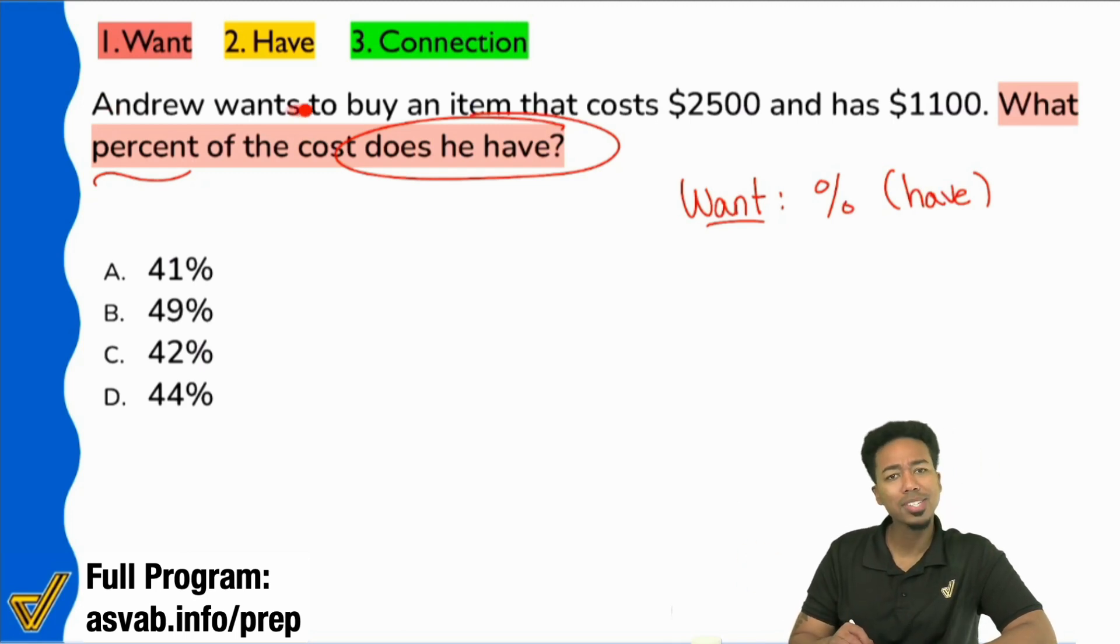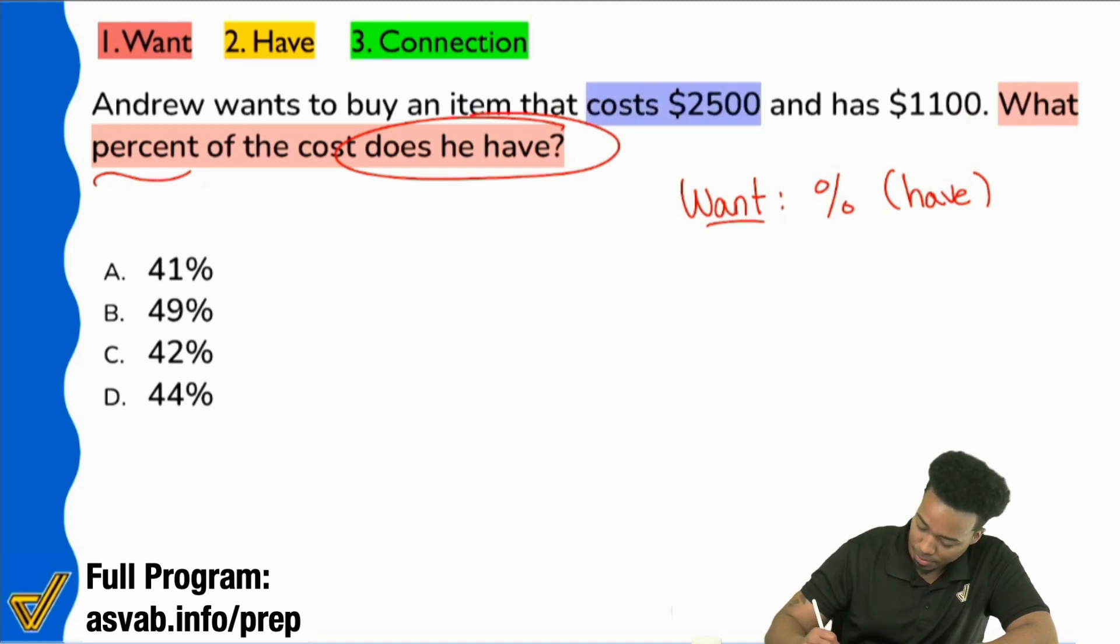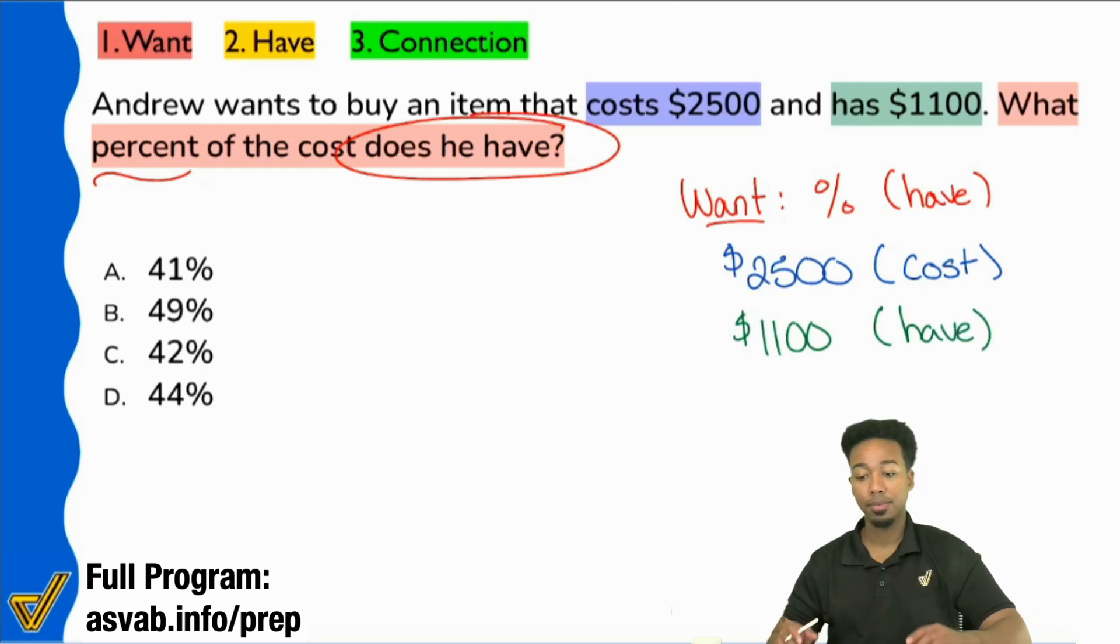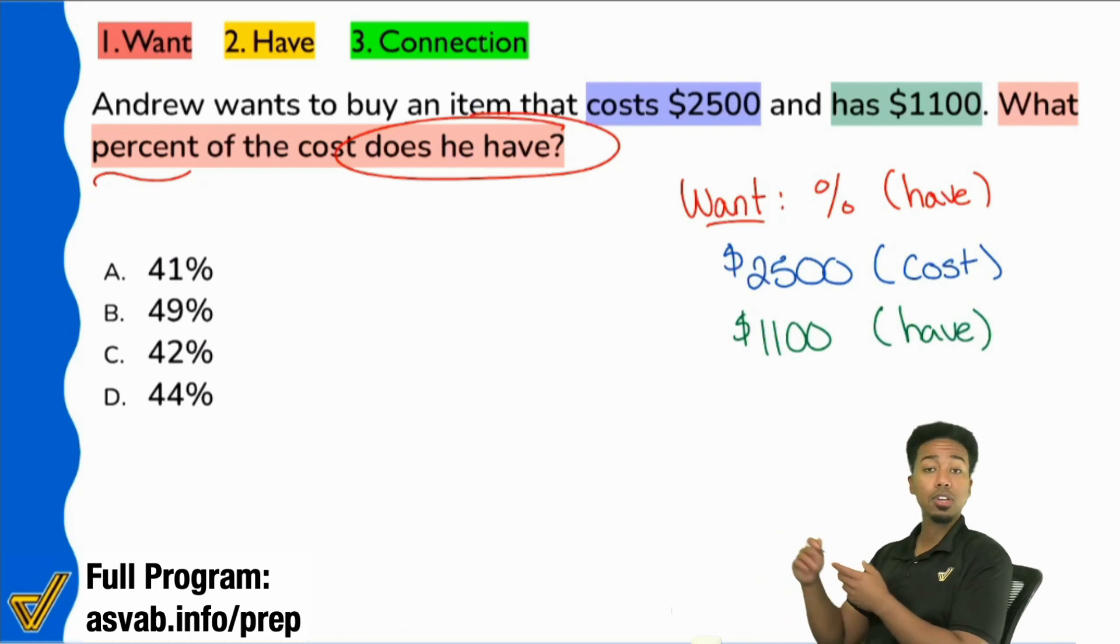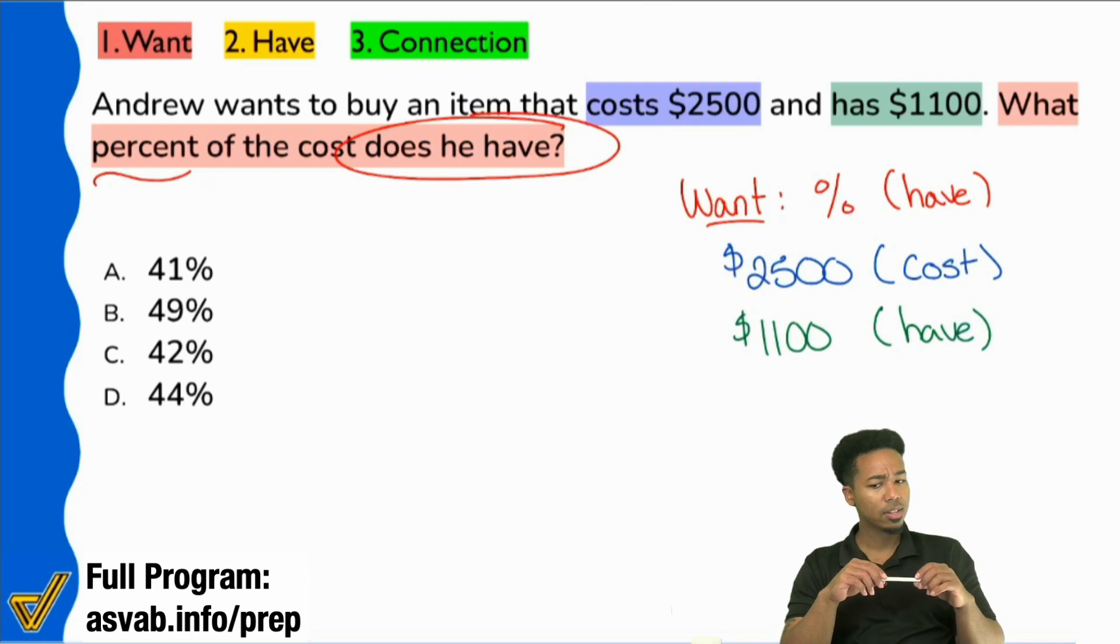So it says, hey, Andrew wants to buy an item that costs $2,500 and he has $1,100. So let's write that down. The cost of the item is $2,500. So $2,500 is the cost. And then over here it says, has $1,100. So $1,100, that's what we have. Everybody, is that understandable to you? We're looking for the percent that we have. $2,500 that we saw there represents the cost of the item. And then the $1,100 that we wrote down represents the amount of money that we have. Are we so far so good on that?